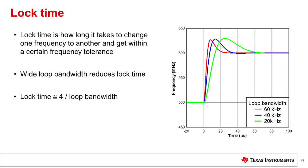In a closed-loop environment, when we change the VCO frequency, it takes some time for the loop to settle down to the new frequency. This transition is called lock time. Lock time can be fast or slow depending on the PLL loop bandwidth — a wider loop bandwidth reduces the lock time. The lock time can be estimated as 4 divided by the loop bandwidth. For example, if the loop bandwidth is 1 kHz, then the lock time is approximately 4 ms.